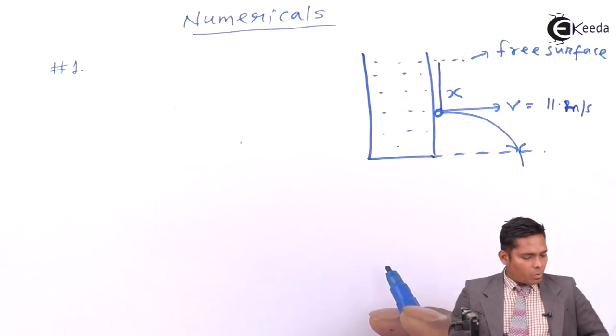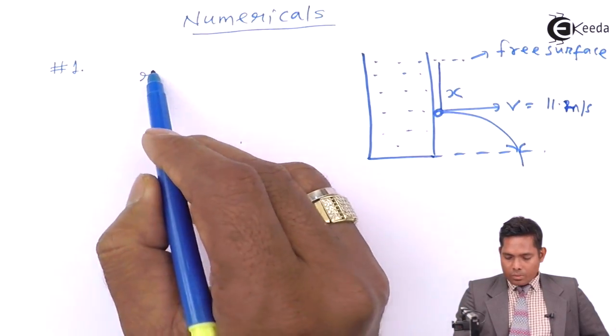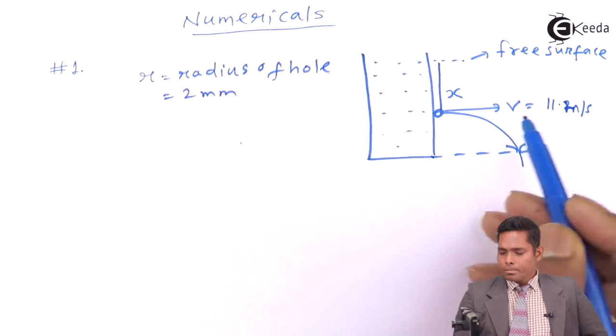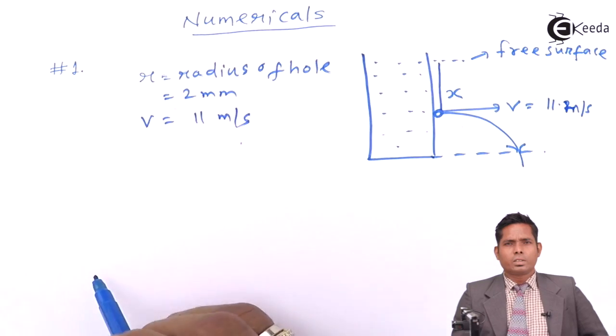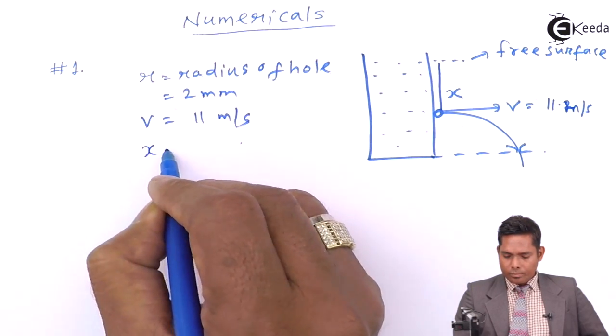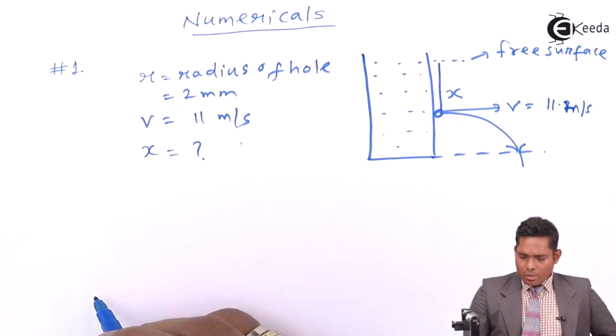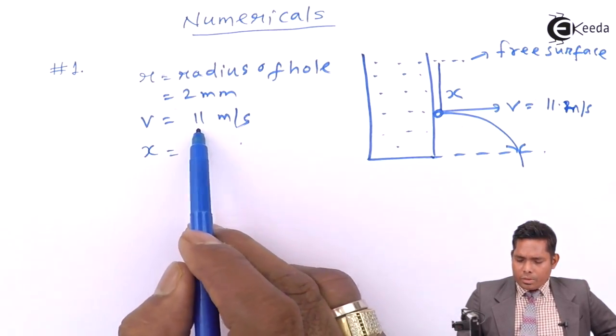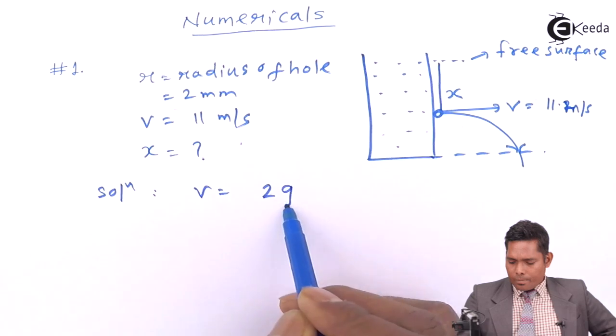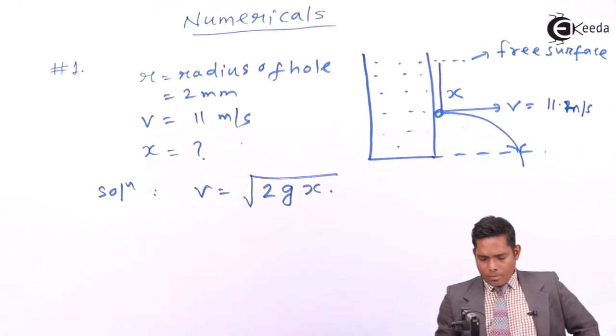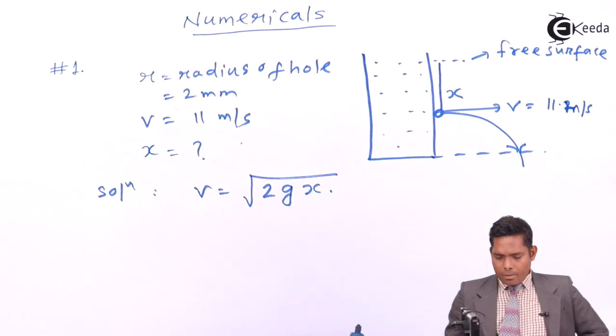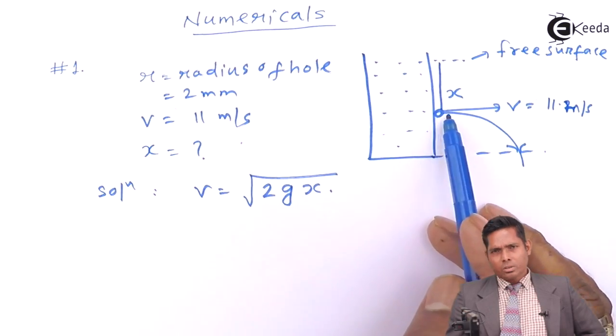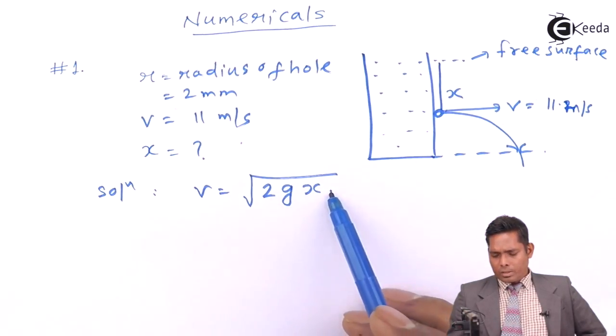The radius of the hole is 2mm. The radius of the hole is 2mm, the velocity is given as 11 meter per second. Now from Torricelli's equation, the velocity of efflux, which is this, is given by this formula. So this 2mm has nothing to do with the velocity factor because the velocity is independent of the area of cross section or the radius of the hole. Rather it depends on the height only.